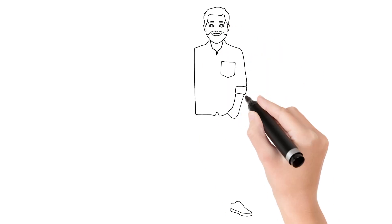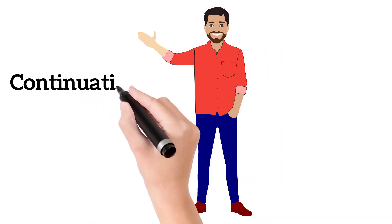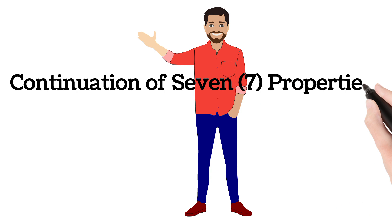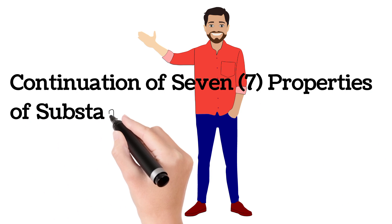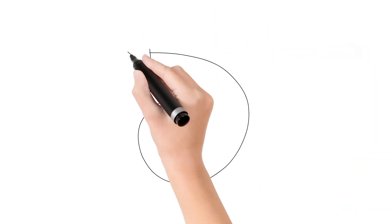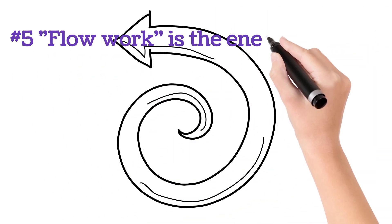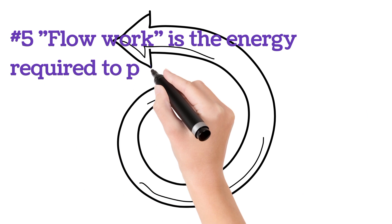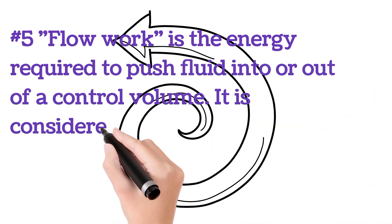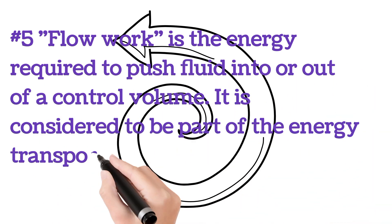Hi, good day, I'm Bob. Today's topic is the continuation of seven properties of a substance. Number five: flow work. Flow work is the energy required to push fluid into or out of a control volume. It is considered to be part of the energy transported with the fluid.